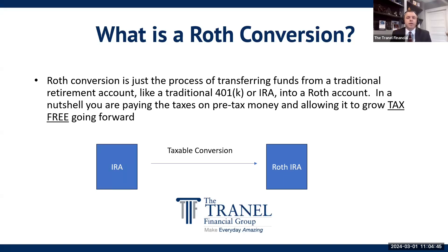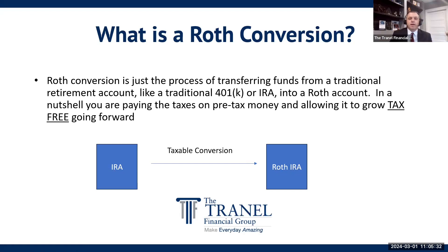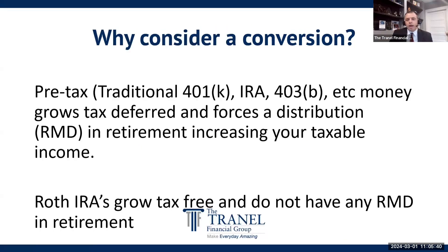When you're doing a Roth conversion, what you're doing in essence is transferring that money from a pre-tax vehicle into an after-tax vehicle. What's different about a Roth IRA is that those funds have already been taxed and they grow 100% tax-free — all of the gains or growth going forward are tax-free. So basically you're shifting money from a pre-tax bucket to an after-tax bucket, and that's a taxable conversion. If you move $25,000 from your IRA into your Roth, you are paying taxes on that $25,000 — and that's where planning is so very, very important.